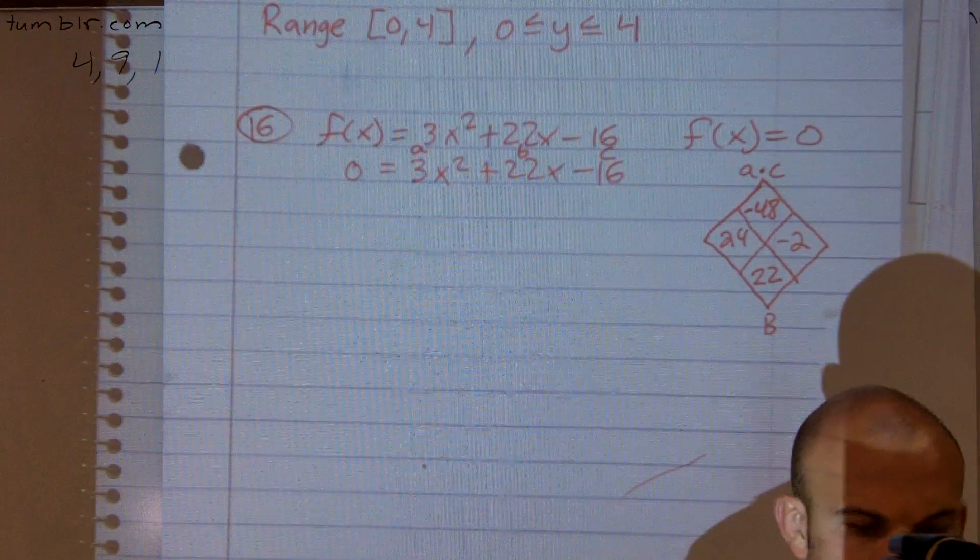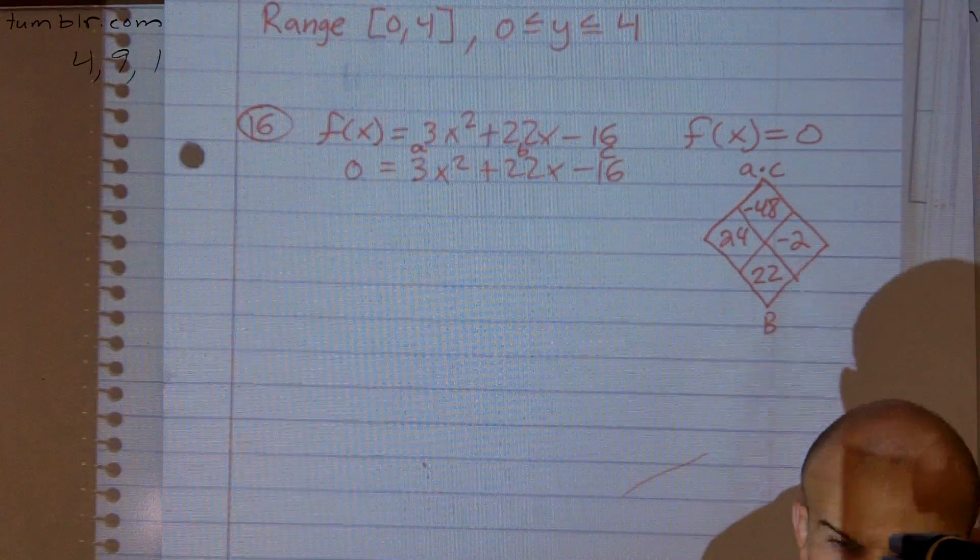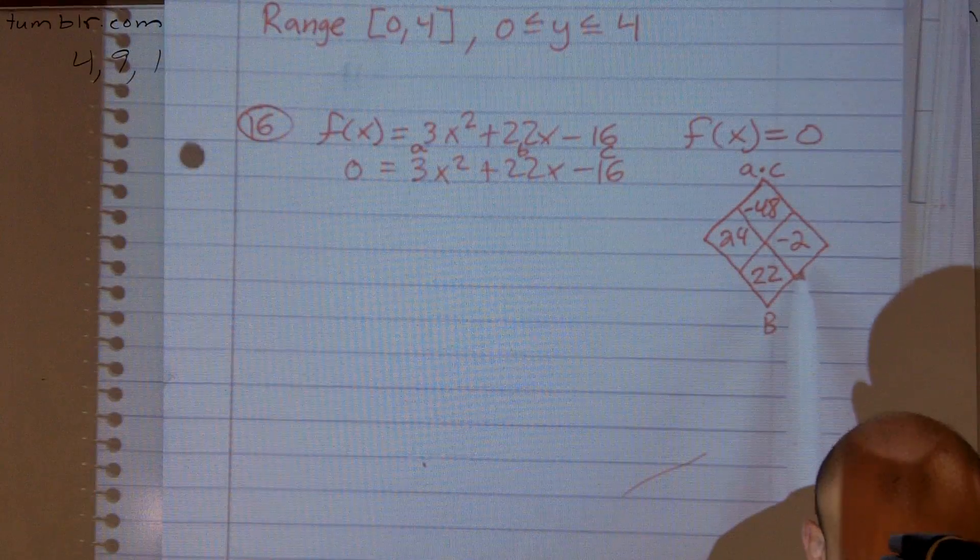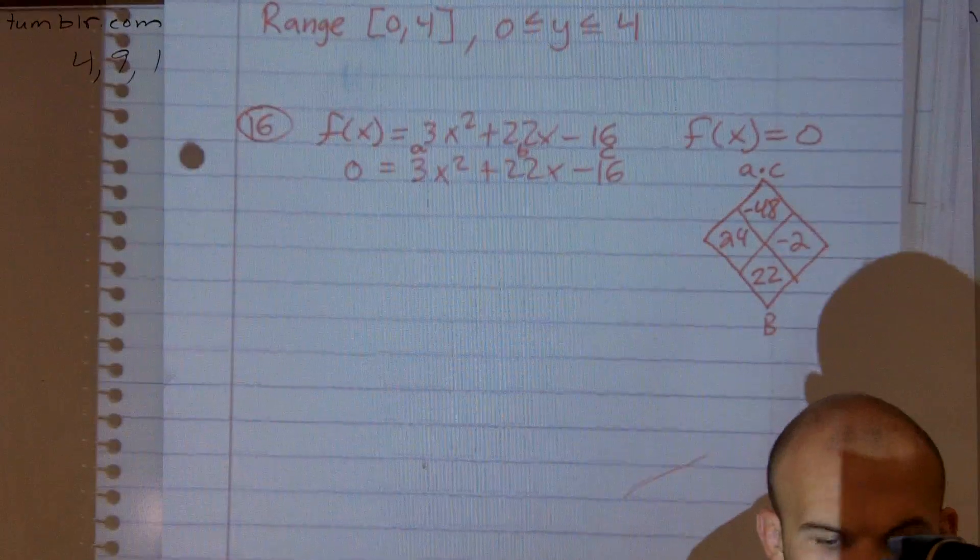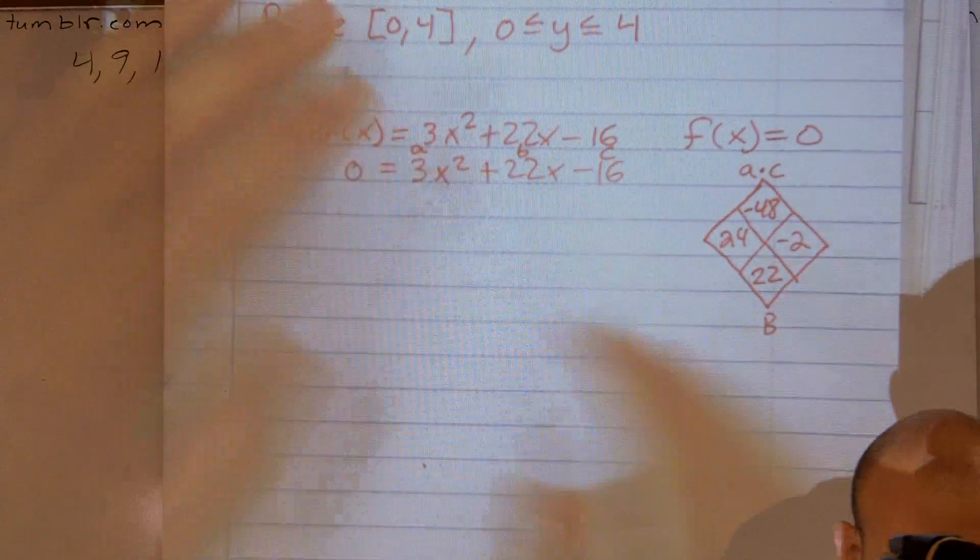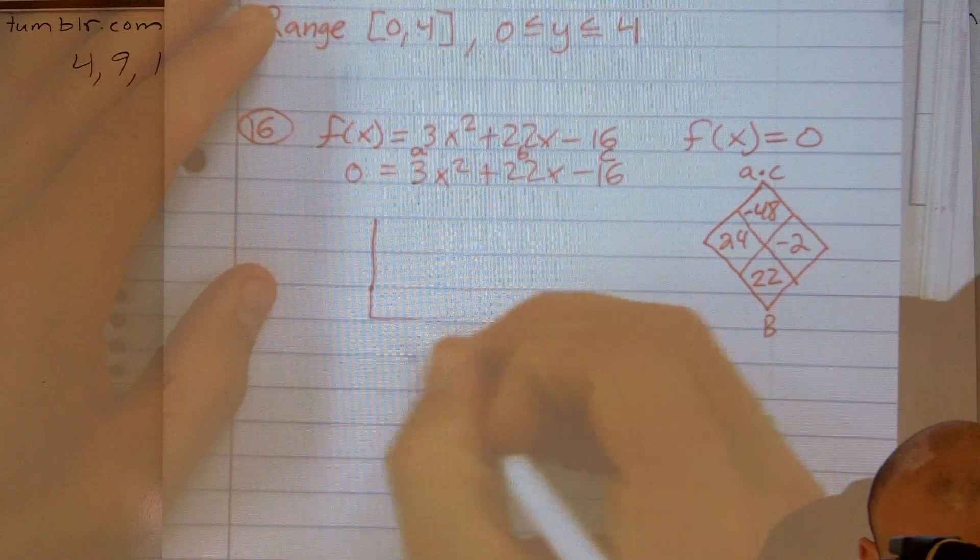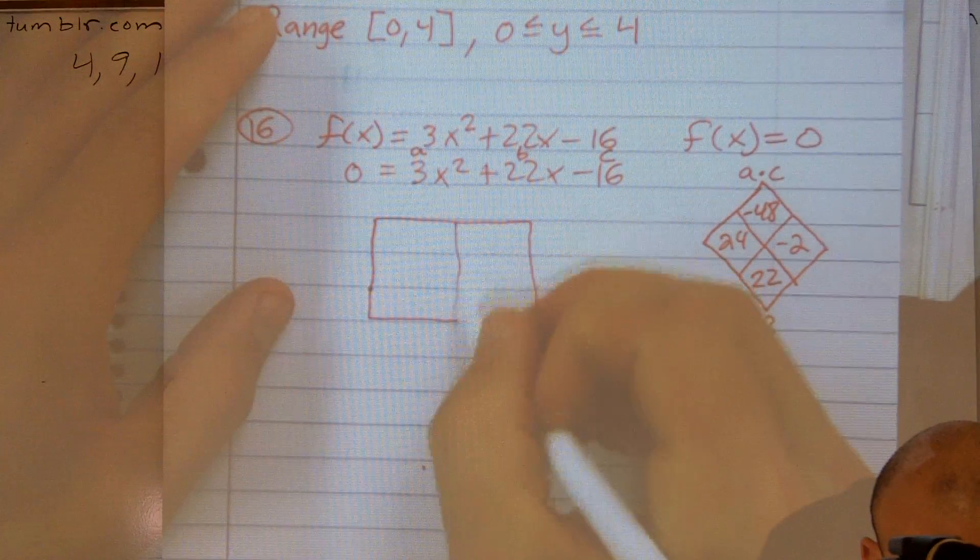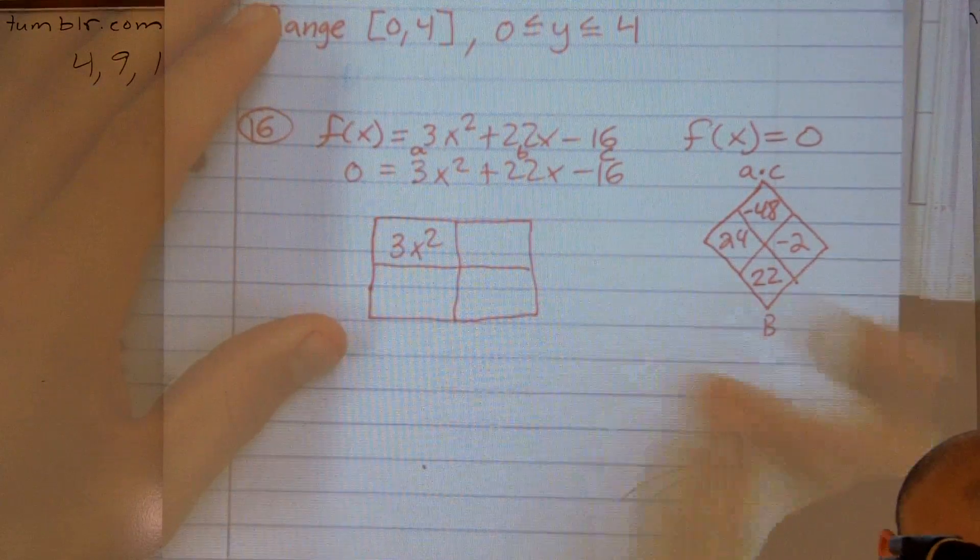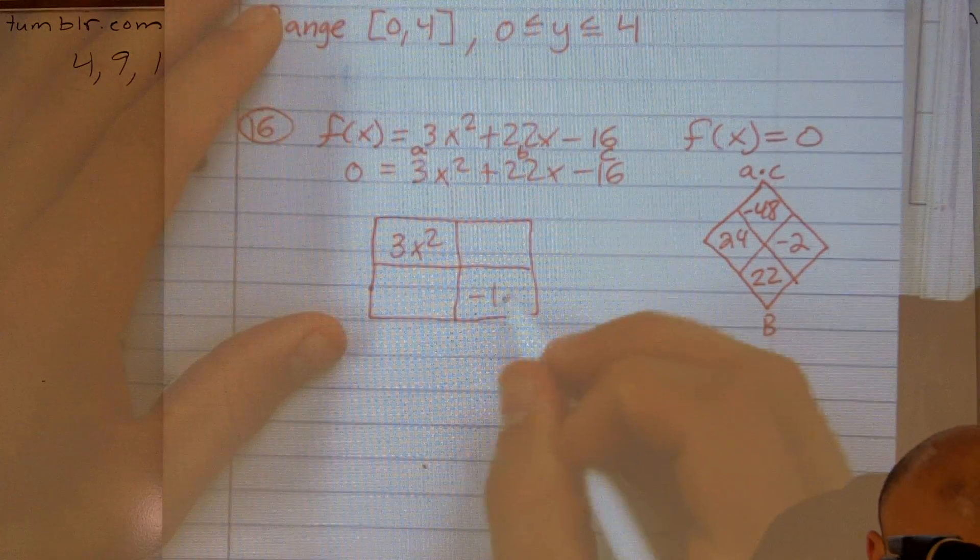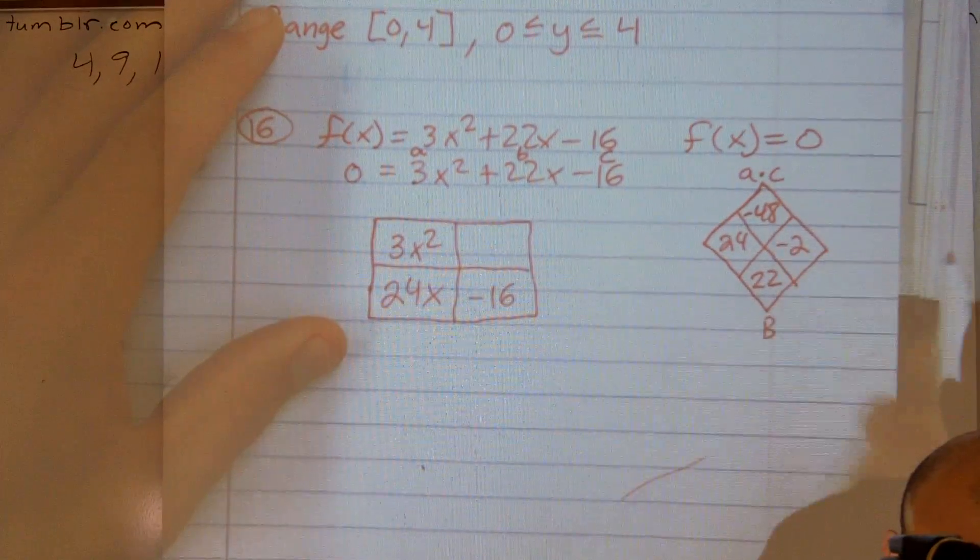Now I'm going to actually, so now there's a couple ways you can do this. You could do, I think we'll call it like the Berry method and factor it out. Another way you could do this is take these two and put them in a box and then factor them back out. So if I was going to put 3x squared there and you put your last value which is a negative 16 here and then you do 24x and negative 2x.